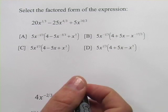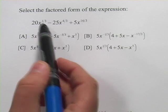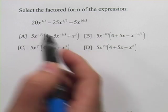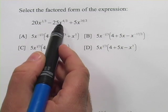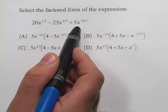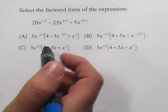In these problems, we are doing some factoring with the complication of fractional and negative exponents. So if we look at this first one, we have 20 times x to the 1/3 minus 25 times x to the 4/3 plus 5 times x to the 16/3, and we want to factor.